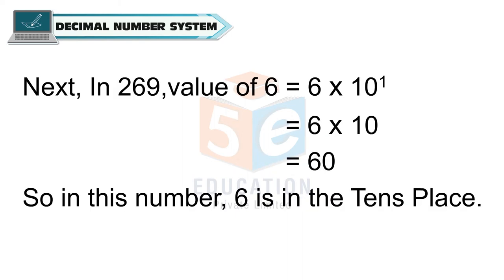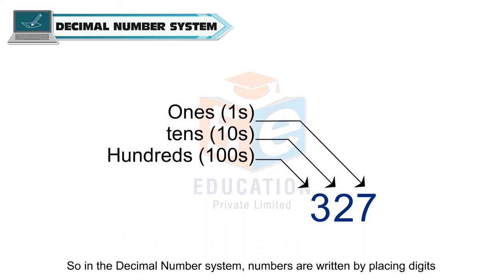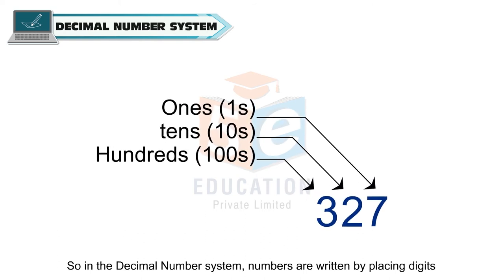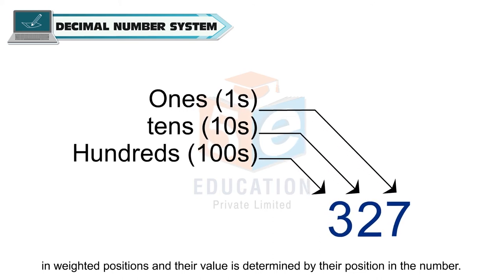Next, in 269, the value of 6 is 6 × 10¹ which is 6 × 10, which is equal to 60. So, in this number, 6 is in the 10th place. So, in the decimal number system, numbers are written by placing digits in weighted positions and their value is determined by their position in the number.